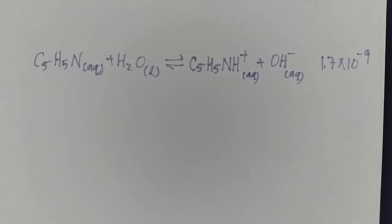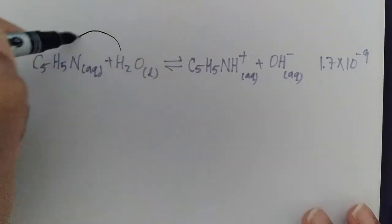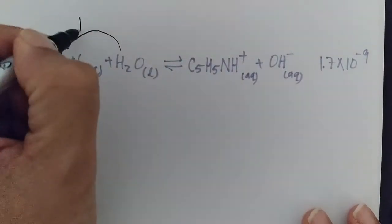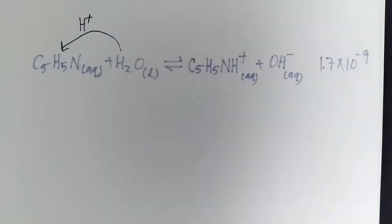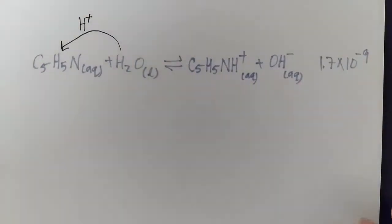So it's going to be a source of OH minus. All right, so here's the equation for pyridine. Again, 10 to the minus 9 is a very, very small number. So here in the Kb, water is acting as the acid, and this pyridine is the base that's abstracting a proton from water.